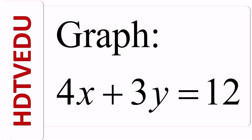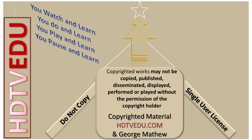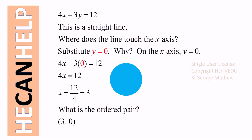Graph 4x plus 3y is equal to 12. We are asked to draw the graph for 4x plus 3y equals 12. We can see that it is a straight line — there is no x squared term in it, so it is a straight line.